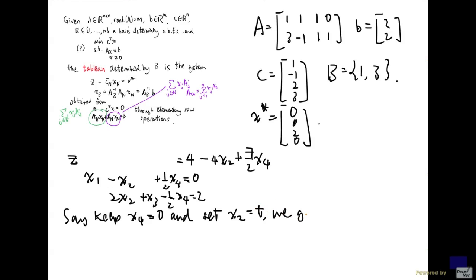We get x_1 equal to t, right? Because x_2 is t and x_4 is 0, and x_3 equal to 2 minus 2t.